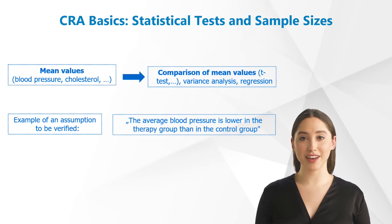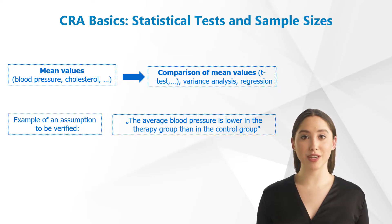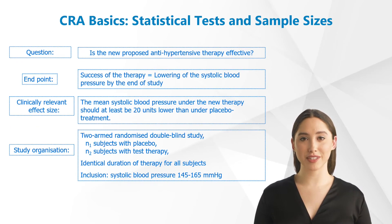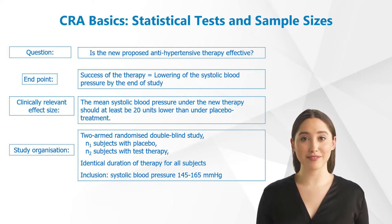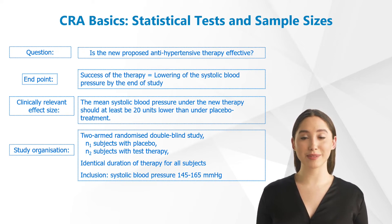As an example, within a study the blood pressure of a therapy group and a control group is compared. The parameter to be measured thus requires a comparison of mean values using t-test, variance analysis, regression, etc. It is assumed that the blood pressure to be measured is lower in the therapy group. The ultimate question is whether the new antihypertensive therapy being investigated in this study is effective or not. The endpoint of the study is the success of the therapy, meaning a lowering of the systolic blood pressure by a clinically interesting effect size of 20 units by the end of the study.